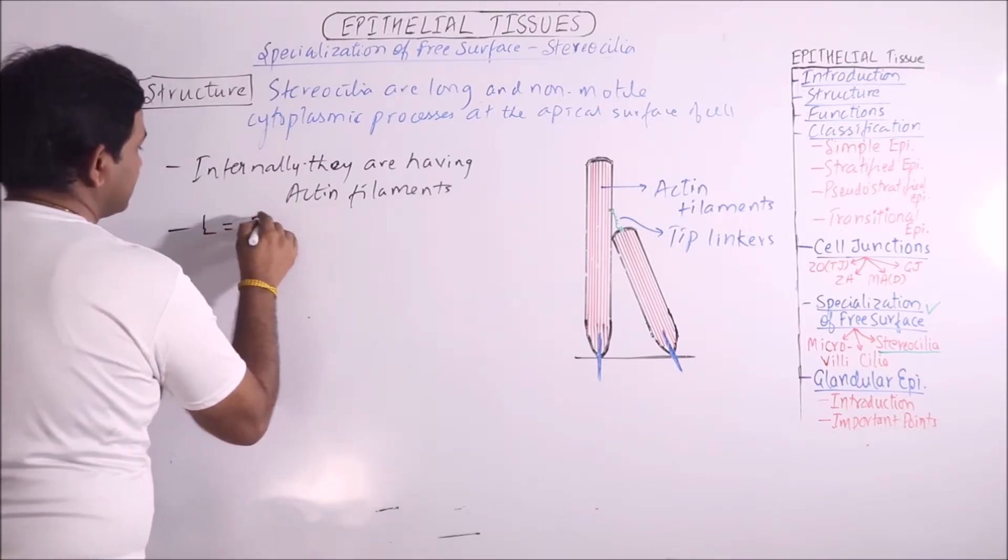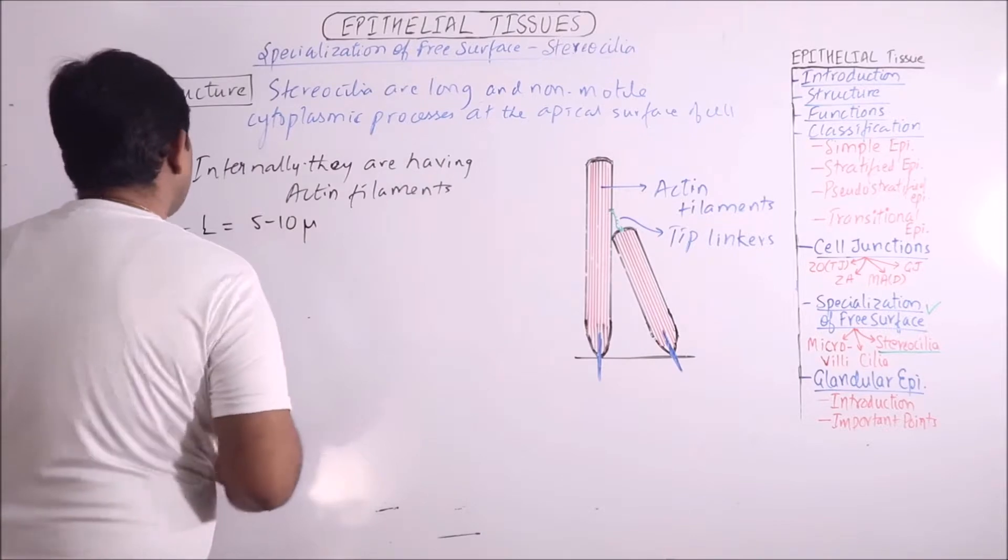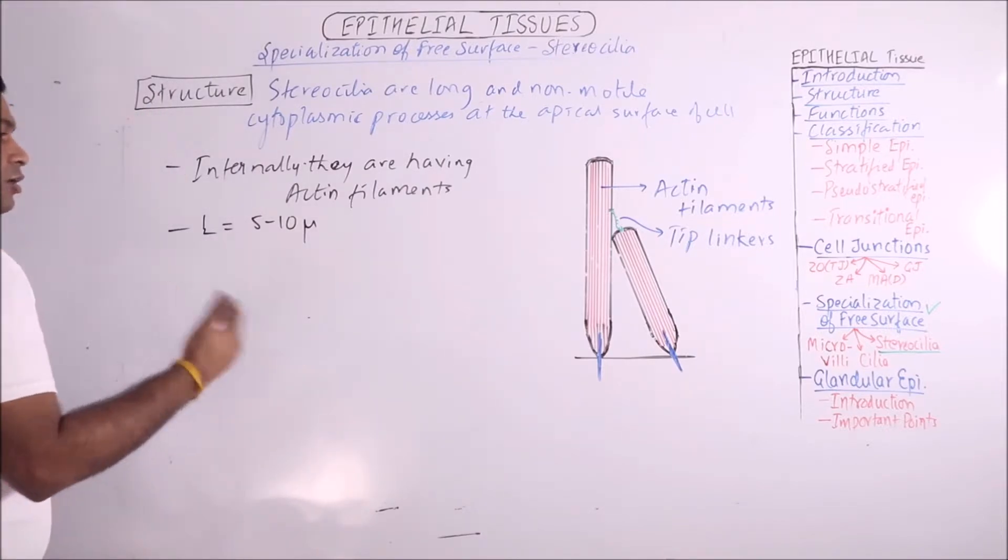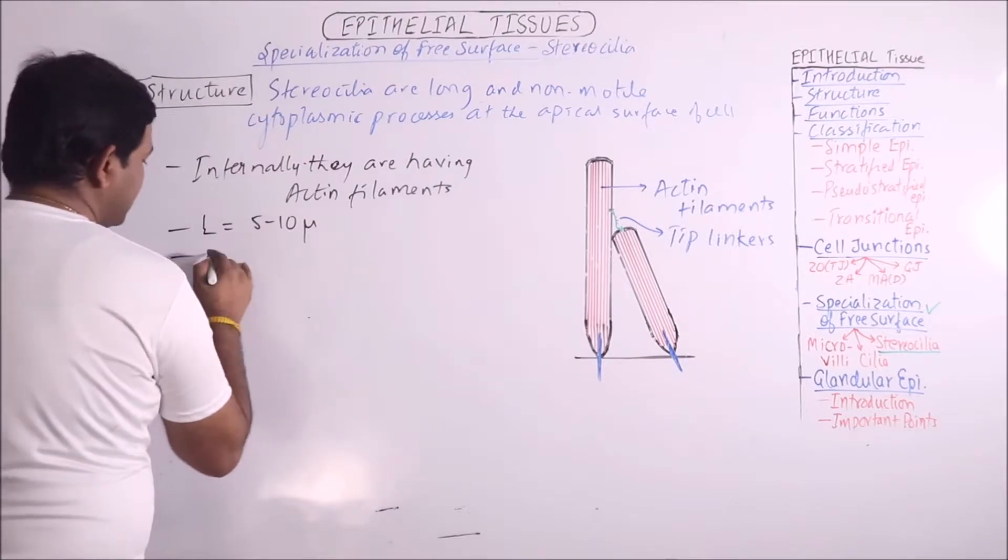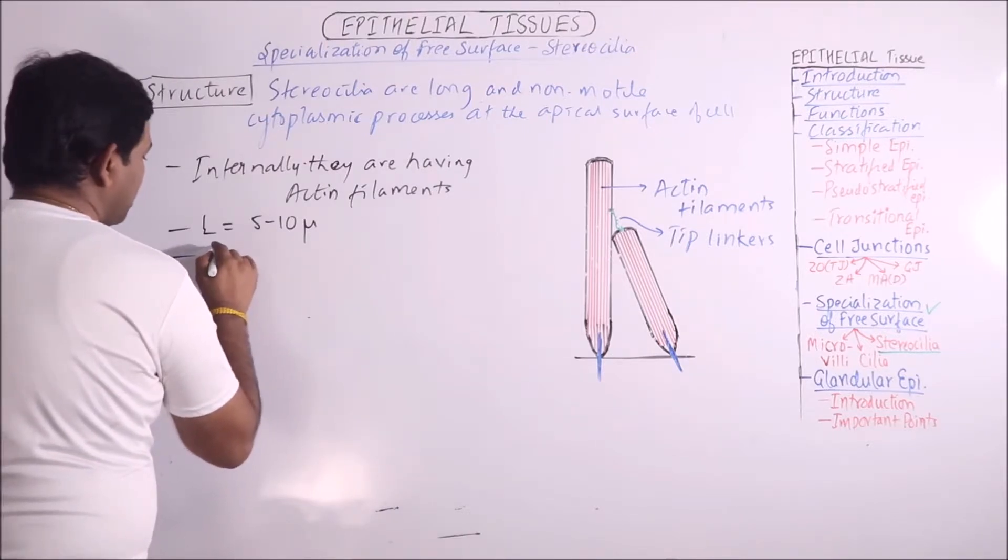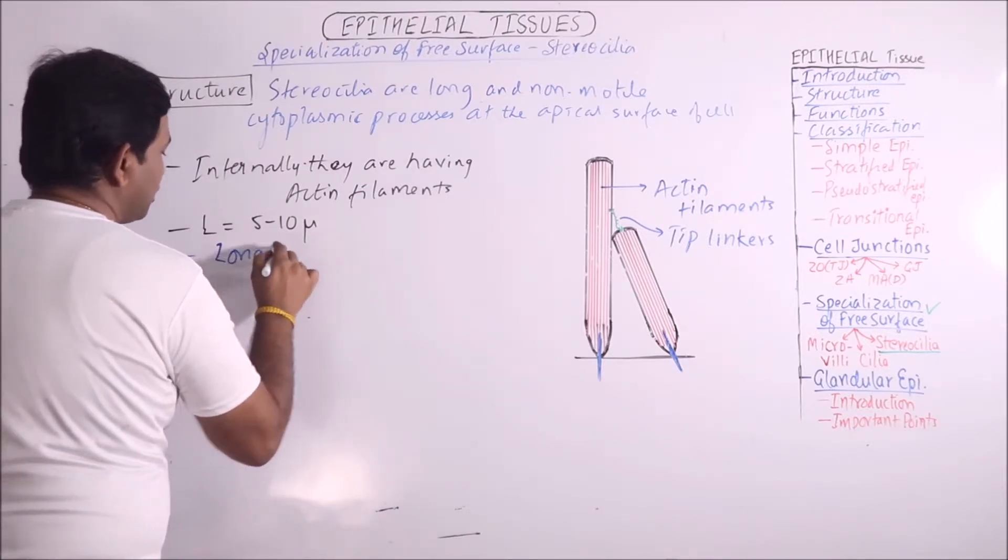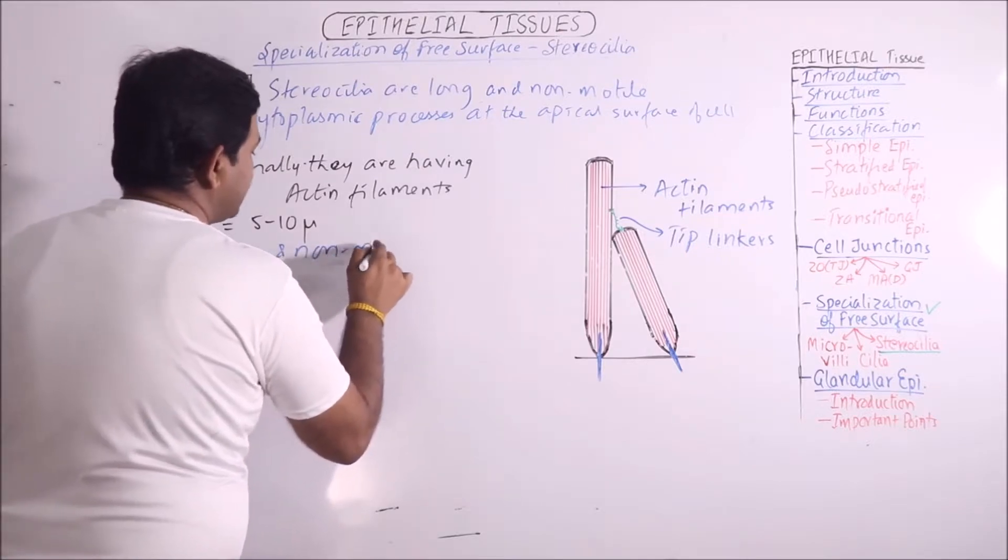Length. These are 5 to 10 microns long. That is, these are longer than the cilia. So sometimes these are also known as long and non-motile cilia.